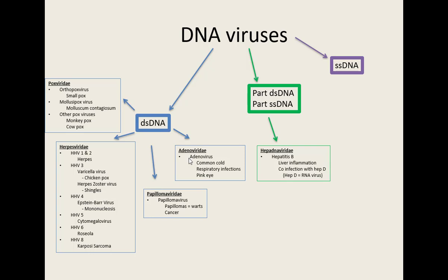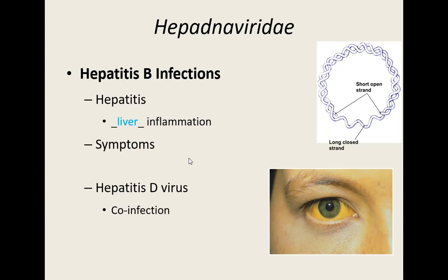Moving to our part-double-stranded, part-single-stranded DNA group: hepatitis B virus. Hepatitis B causes hepatitis — hepat means liver, itis means inflammation. So it's inflammation of the liver. Symptoms of liver inflammation include jaundice — yellowing of the skin and eyes. The whites of the eyes can turn yellow, which is easier to see. The liver area on the right side will be painful and sensitive. The patient will also be tired and may have a fever.